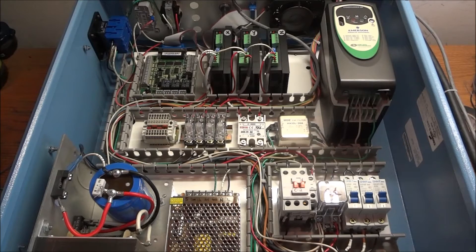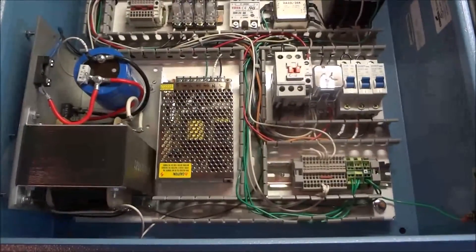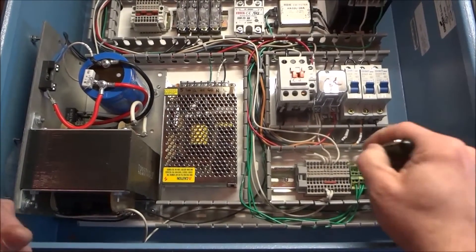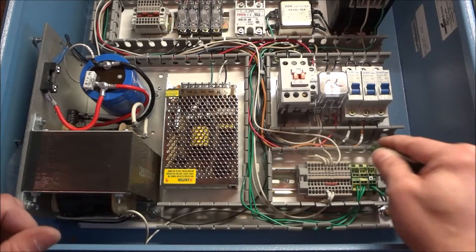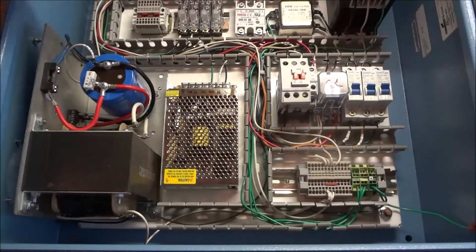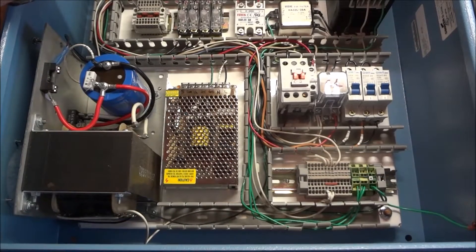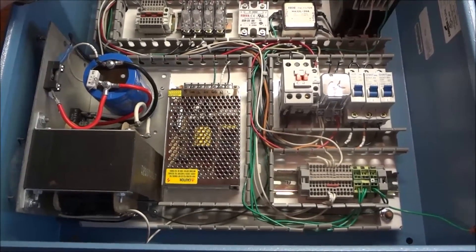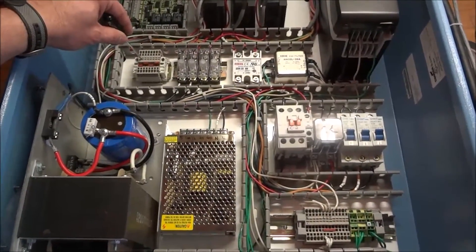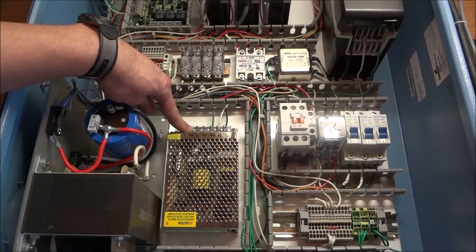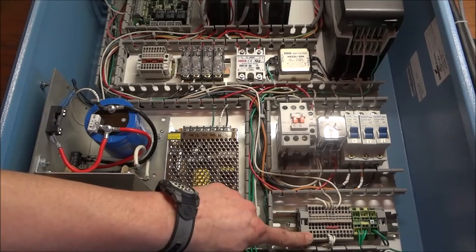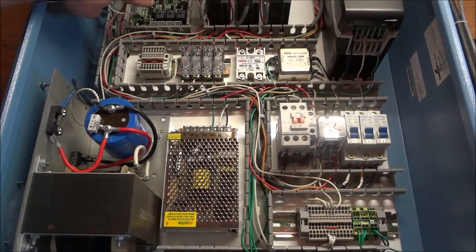So one thing that I did that I want to point out is I have taken some of the terminal blocks that I had down here and I have transferred them up to here. The reason being is as I'm wiring this panel up, I didn't want to bring the wires from my power supply down to my terminal block and then back up to my C11GS.